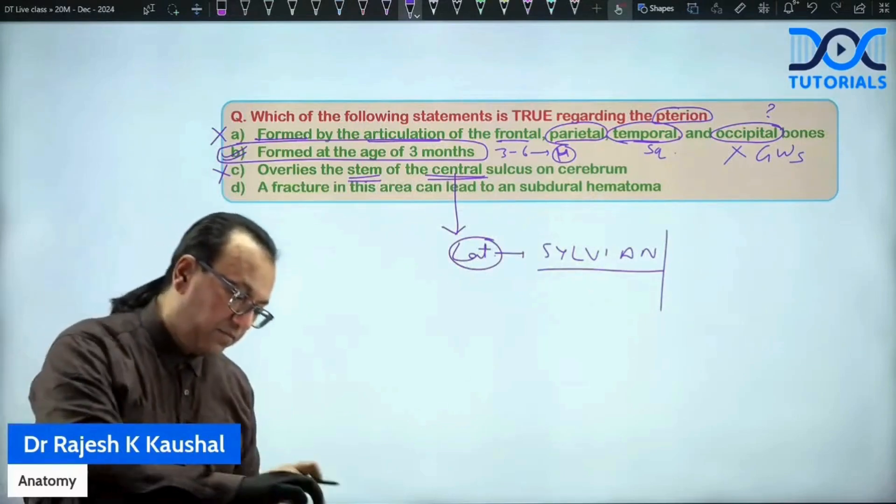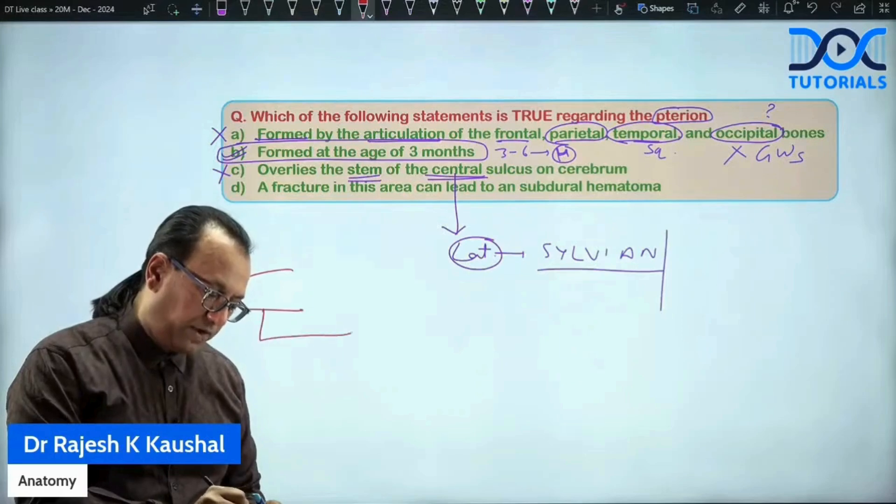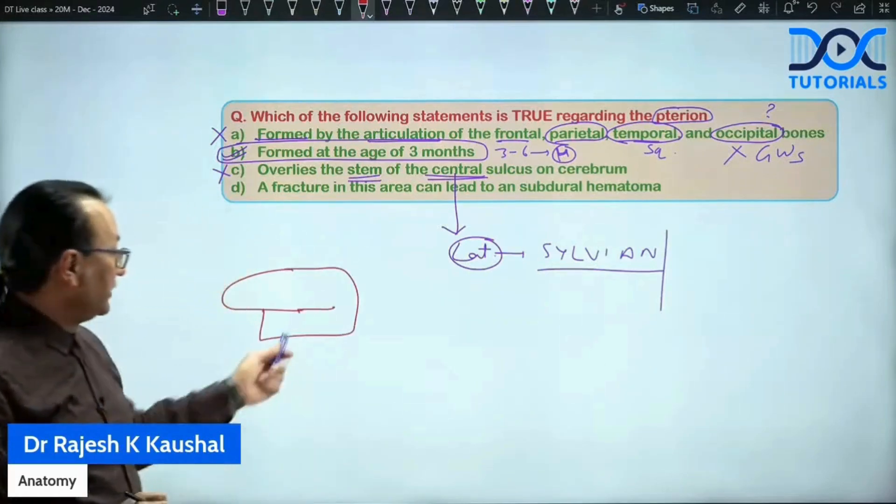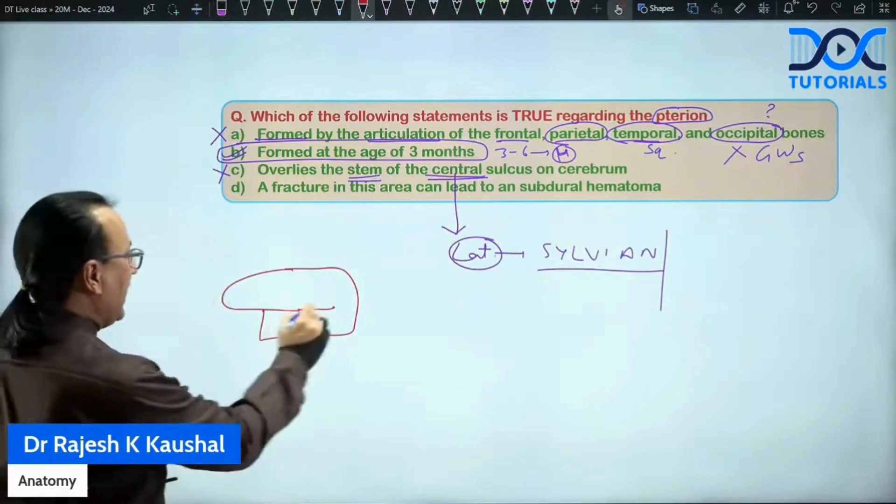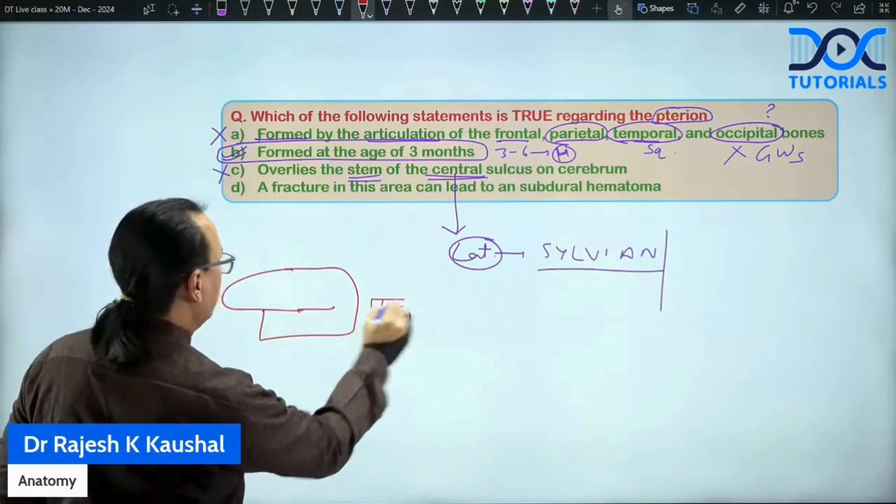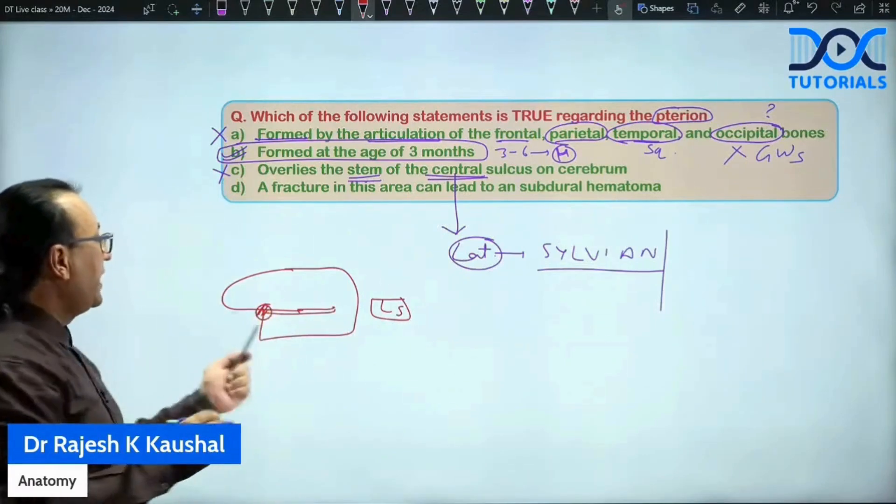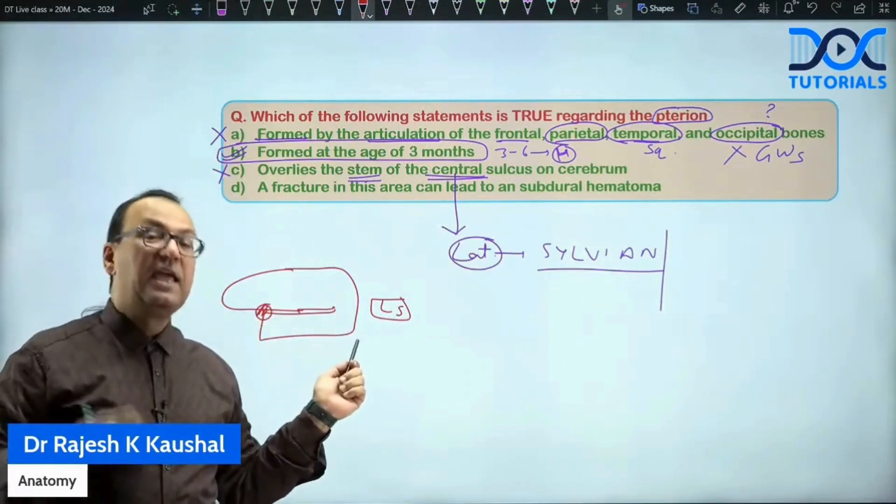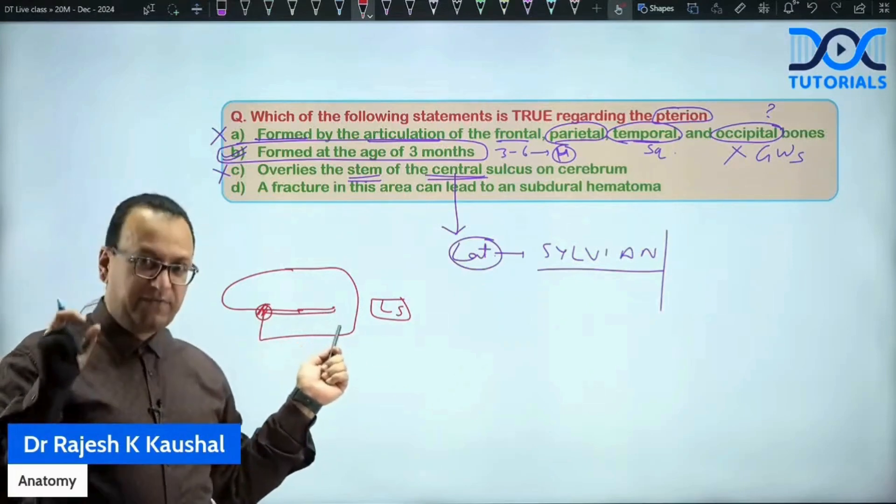Let me show you in a diagram, say you draw this diagram of the cerebrum. When you draw the diagram of cerebrum, you will find that cerebrum will have some sulci. The one which you are seeing right now is the lateral sulcus. This is lateral sulcus. This one is lateral sulcus and pterion is here, right here.